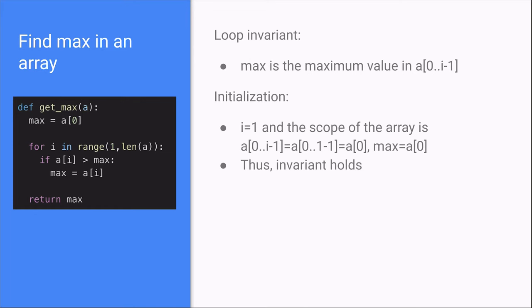The loop invariant is max is the maximum value in a from index 0 to index i minus 1. You can see that the loop invariant is a Boolean statement and it's also in regards to the goal of the algorithm, which is to find the maximum value in the array. Thus, this is a good loop invariant.